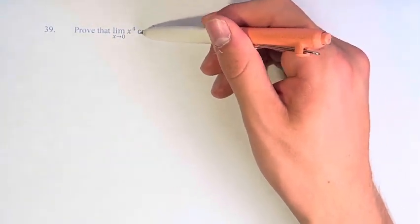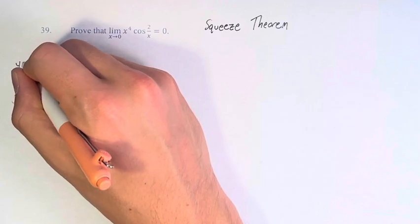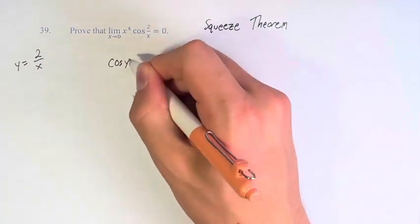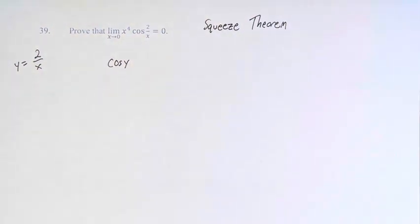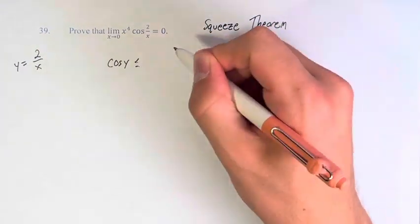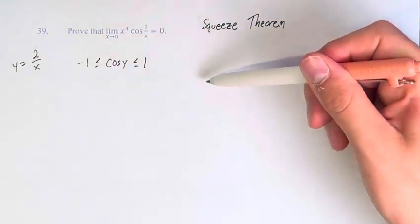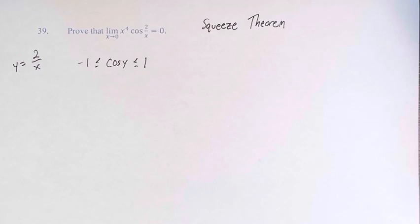We have our function here and we notice the cosine of 2 over x. If we represent y by 2 over x, this cosine of y, it doesn't matter what x or y is, is always going to be between negative 1 and 1. That's how the cosine function works—it oscillates between negative 1 and 1 infinitely.